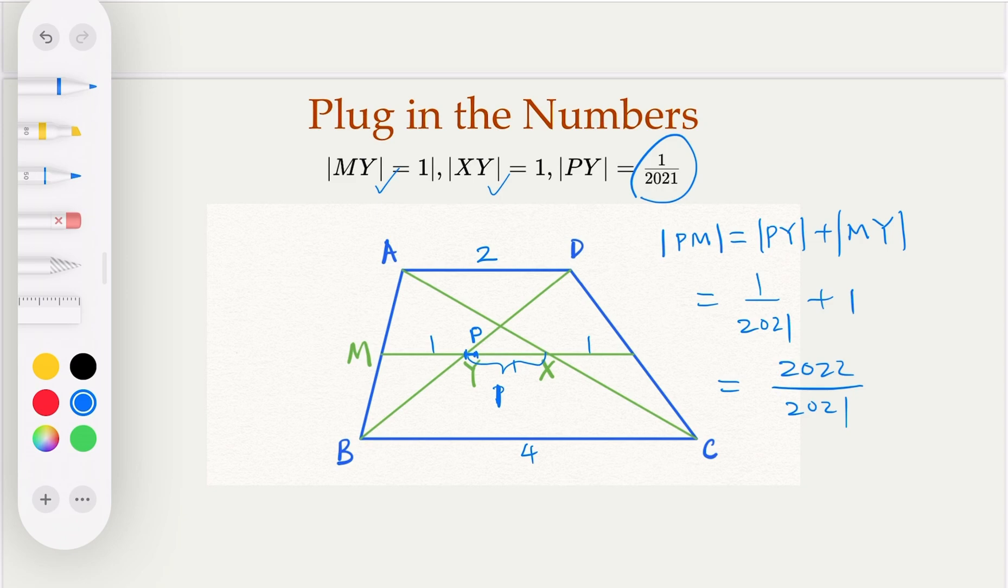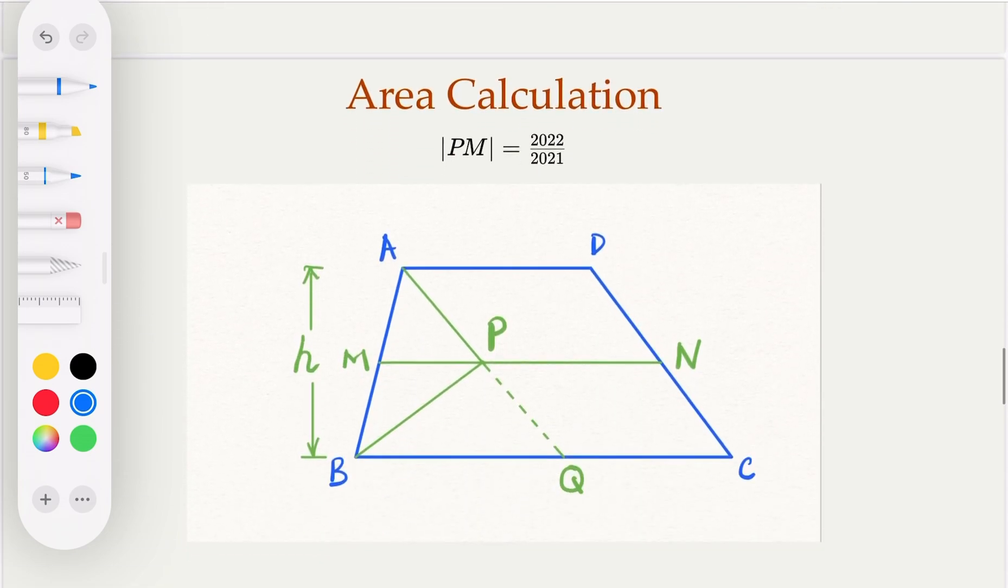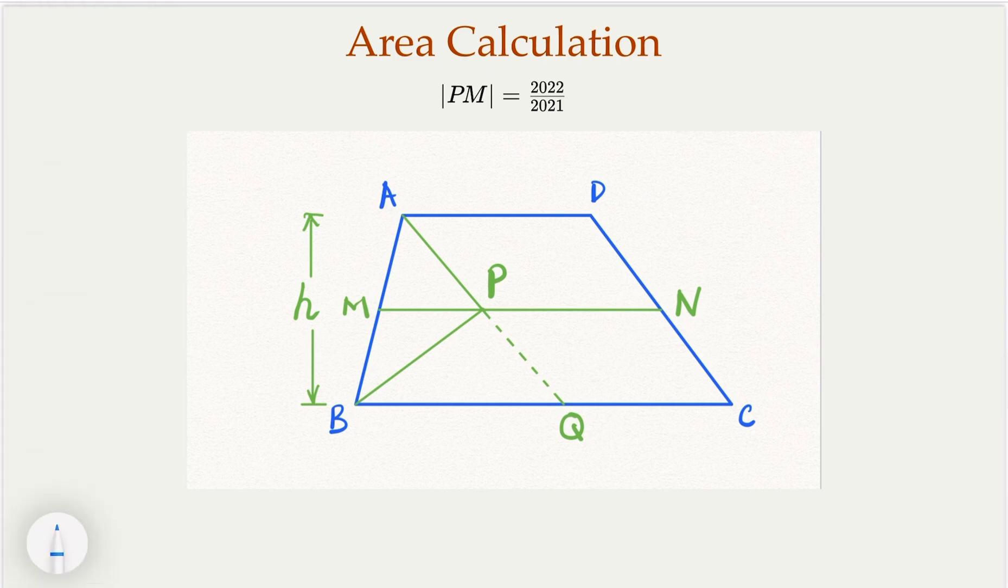So let's do that. How do we calculate the areas? First of all, the trapezoid is easy. Let's assume the height is H here. The trapezoid ABCD, the area is going to be one half of H times AD, which is 2 plus 4. The base, 2 and 4. So that equals 3H.